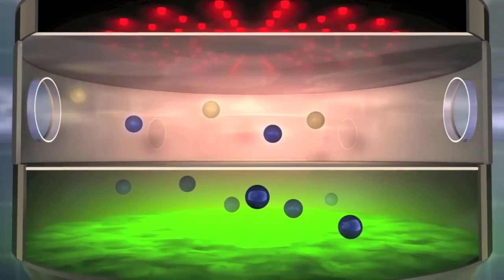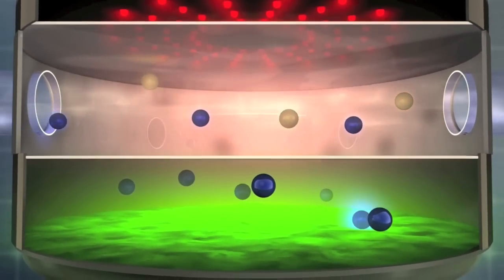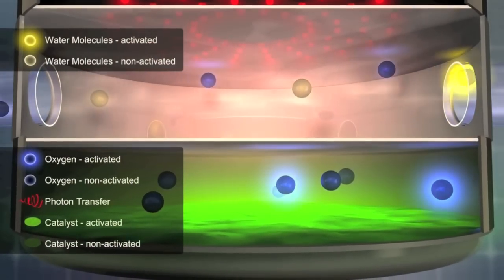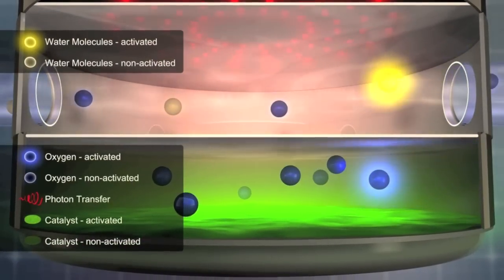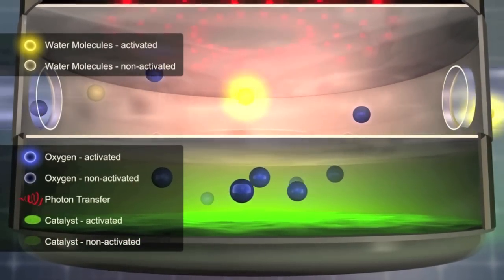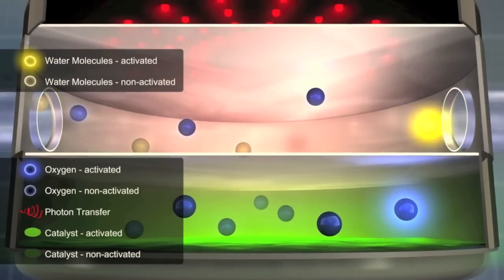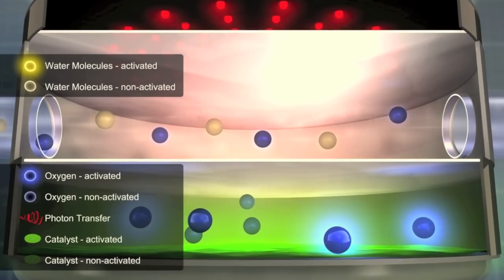By stimulating the catalyst through light of a special wavelength, the normally unreactive oxygen is stimulated into its highly reactive singlet state. In a fraction of a second, the highly reactive singlet oxygen returns to its original state and gives off energy in the process.